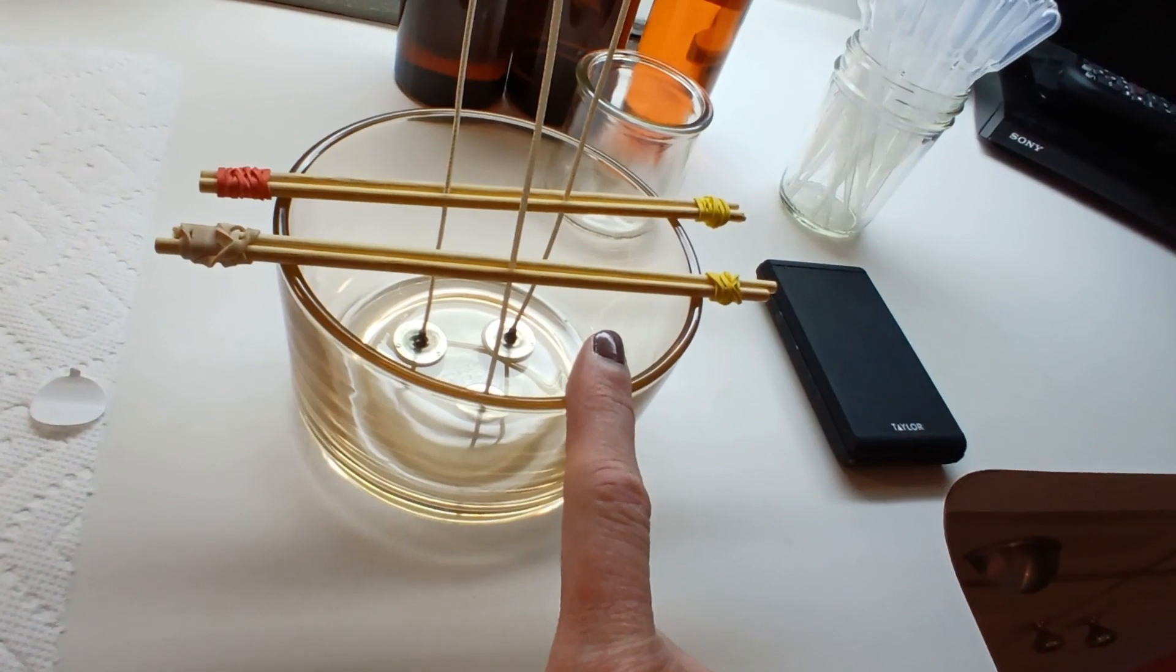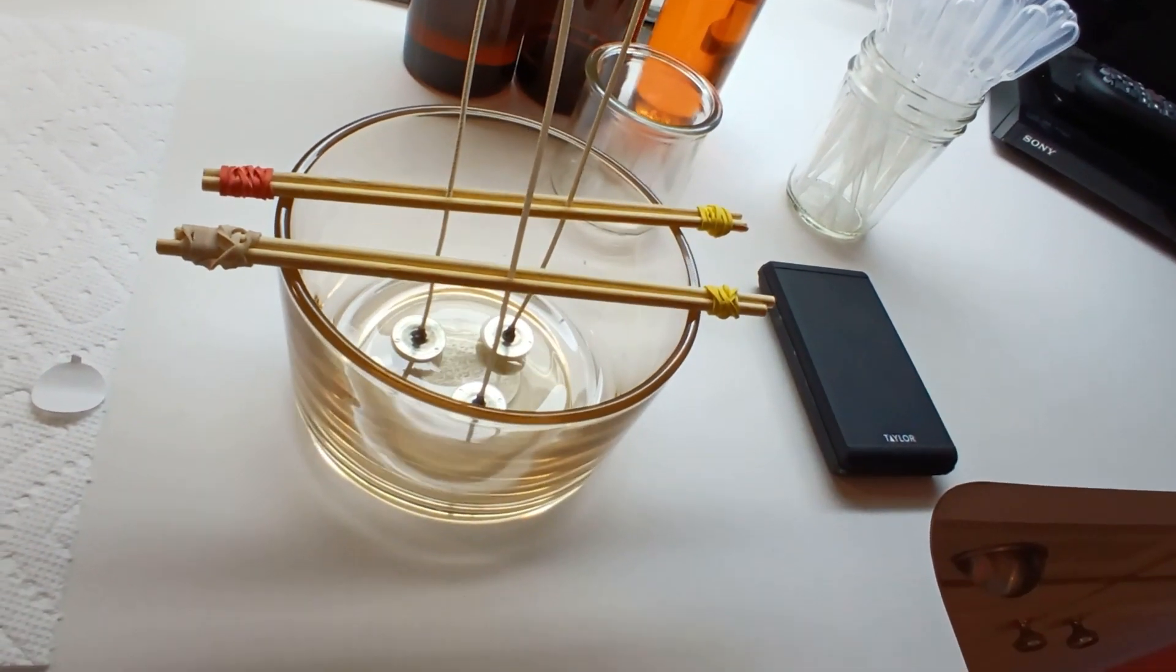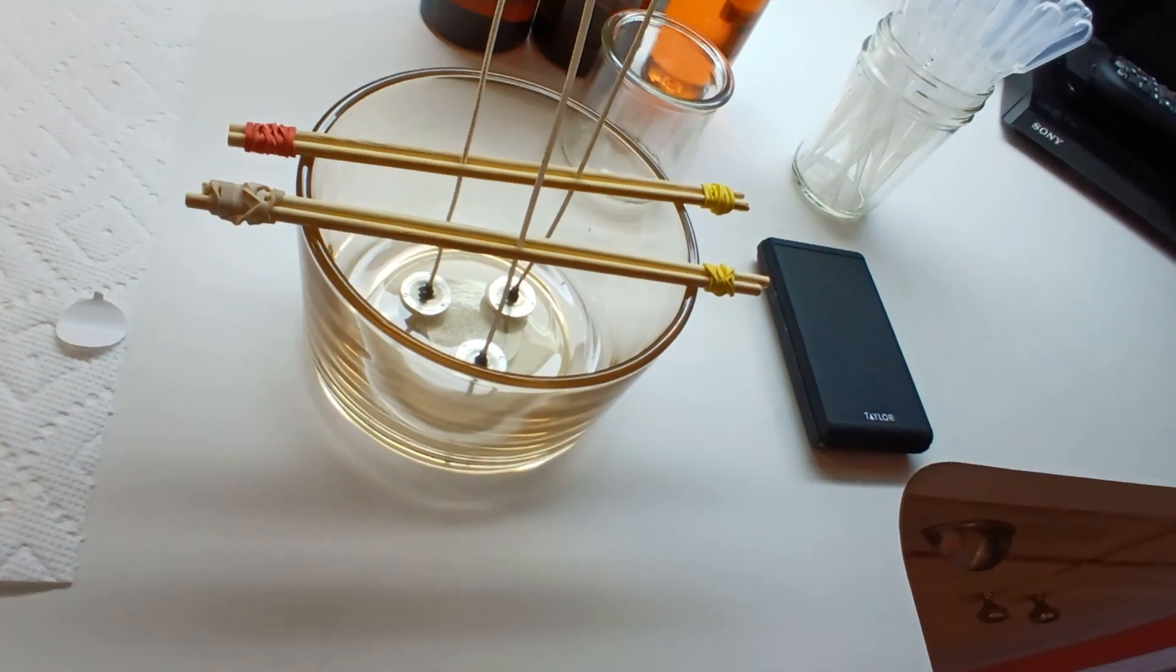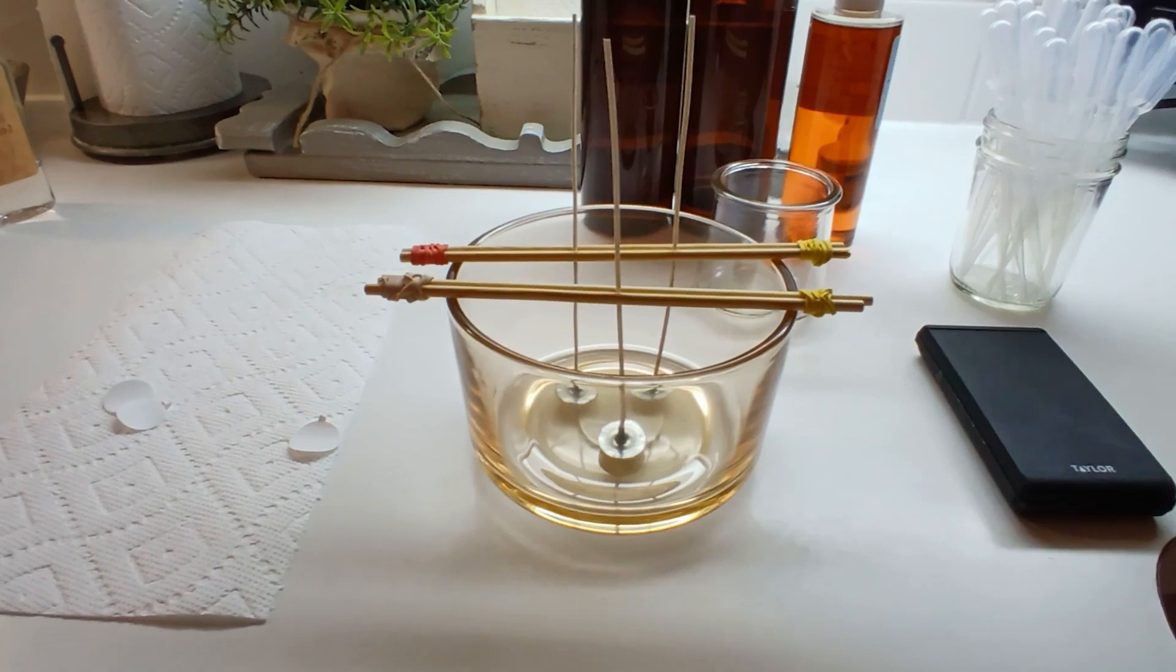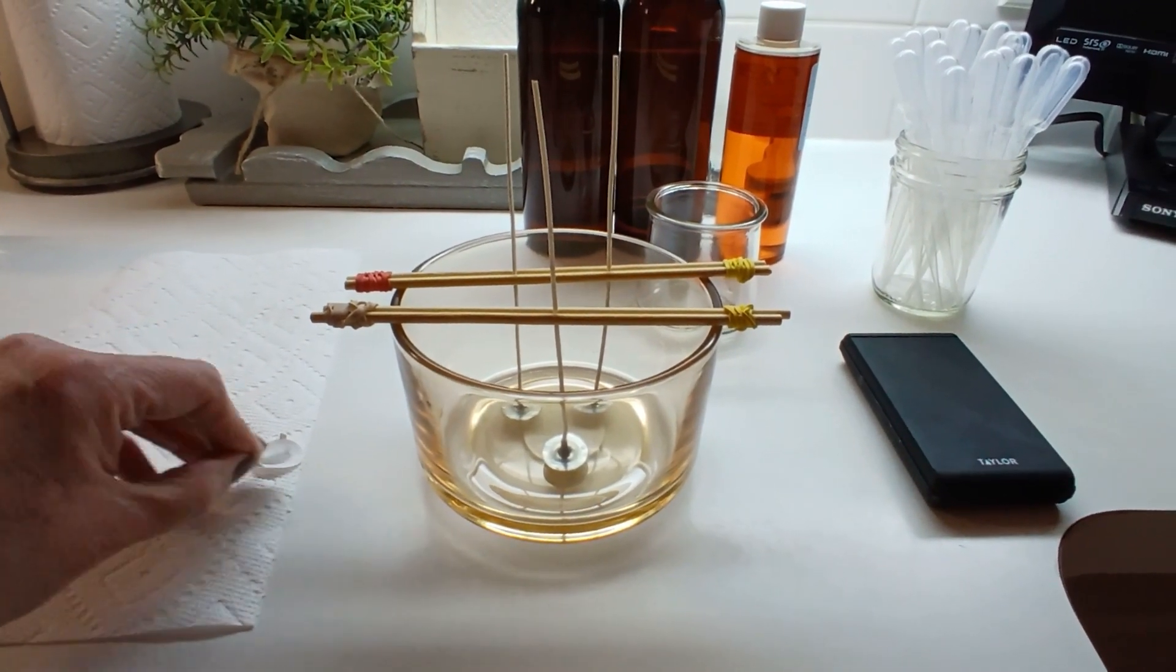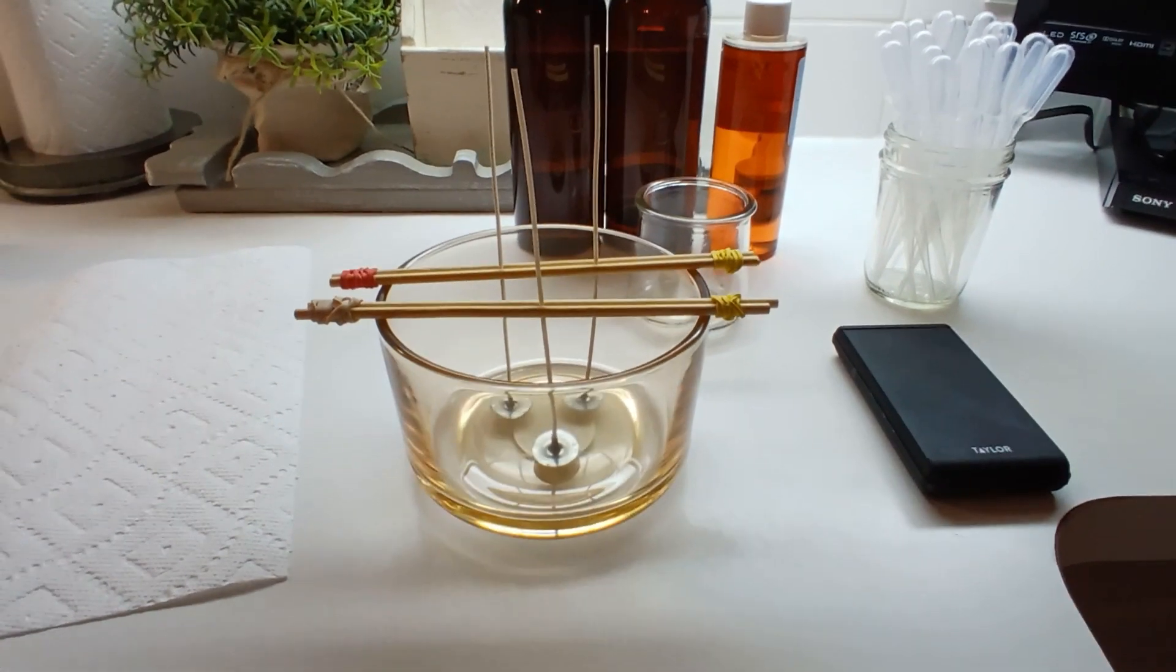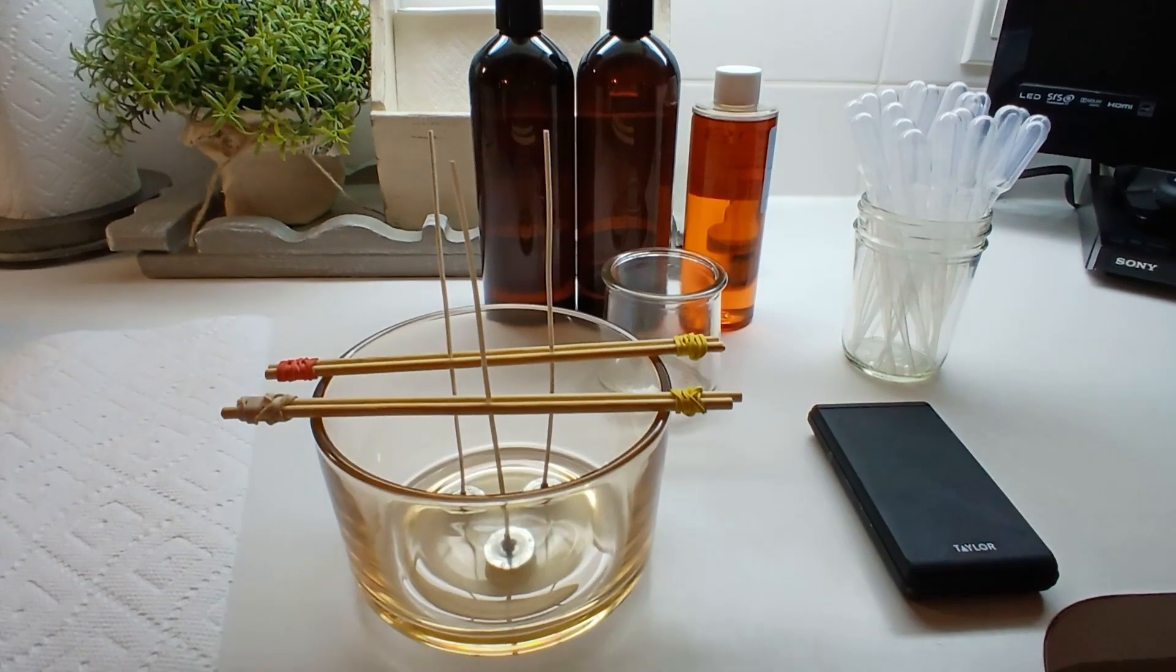This jar is 15 ounces of wax. We're going to do 10% fragrance. So that would be 13.5 ounces of wax and then 1.5 ounces of fragrance. Altogether the candle is going to be 15 ounces. There is a little bit of math involved. This is Ed's job, and we're mixing in three different fragrances into this candle today.